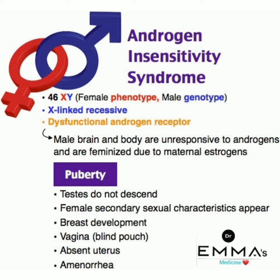At puberty, the presentations of androgen insensitivity syndrome are: testes do not descend, female secondary sexual characteristics appear, breast development occurs, vagina is a blind pouch, and there is absent uterus and amenorrhea.